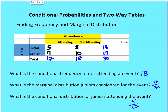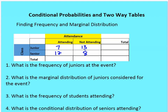Now for Classwork 1.1.2 — do this on paper and submit it as specified. Using the table of values, answer: What is the frequency of juniors at the event? What is the marginal distribution of juniors considered for the event? What is the frequency of students attending? What is the conditional distribution of seniors attending? Note that for frequency questions, it's not always necessary to specify joint, marginal, or conditional, as long as you're clear. That brings us to the end of this video — please join us in the next part, where we cover how to set up a free response: state, plan, do, and conclude.